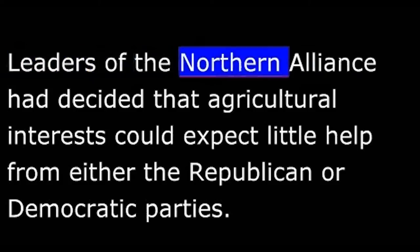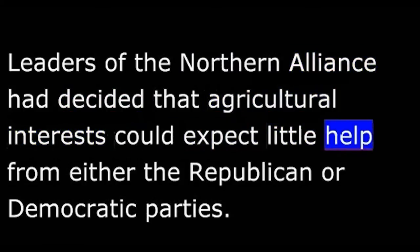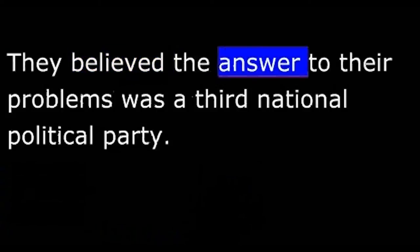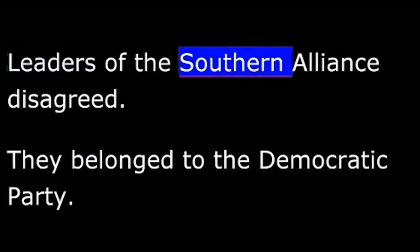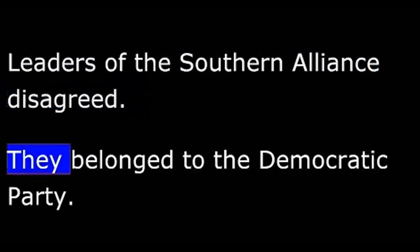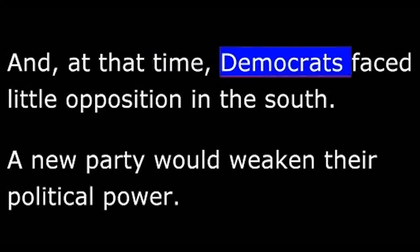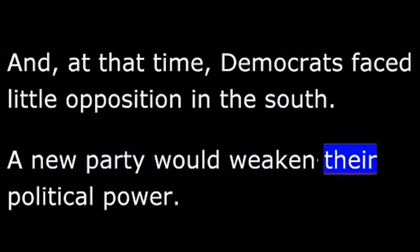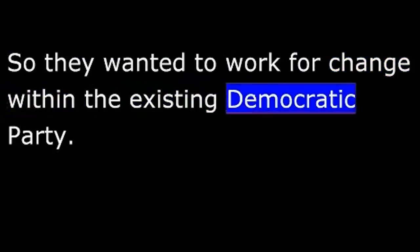The chief issue was political. Leaders of the Northern Alliance had decided that agricultural interests could expect little help from either the Republican or Democratic parties. They believed the answer to their problems was a third national political party. Leaders of the Southern Alliance disagreed. They belonged to the Democratic Party. And at that time, Democrats faced little opposition in the South. A new party would weaken their political power. So they wanted to work for change within the existing Democratic Party.